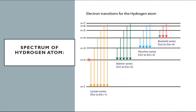When the electron transitions from any higher state to the second energy state, the Balmer series is generated, which lies in the visible region — colors that can be seen with the naked eye. When the electron transitions to the third energy state, it produces the Paschen series in the infrared region. Transitions to the fourth state produce the Brackett series, also in the infrared region. Transitions to the fifth state produce the Pfund series, also in the infrared region.